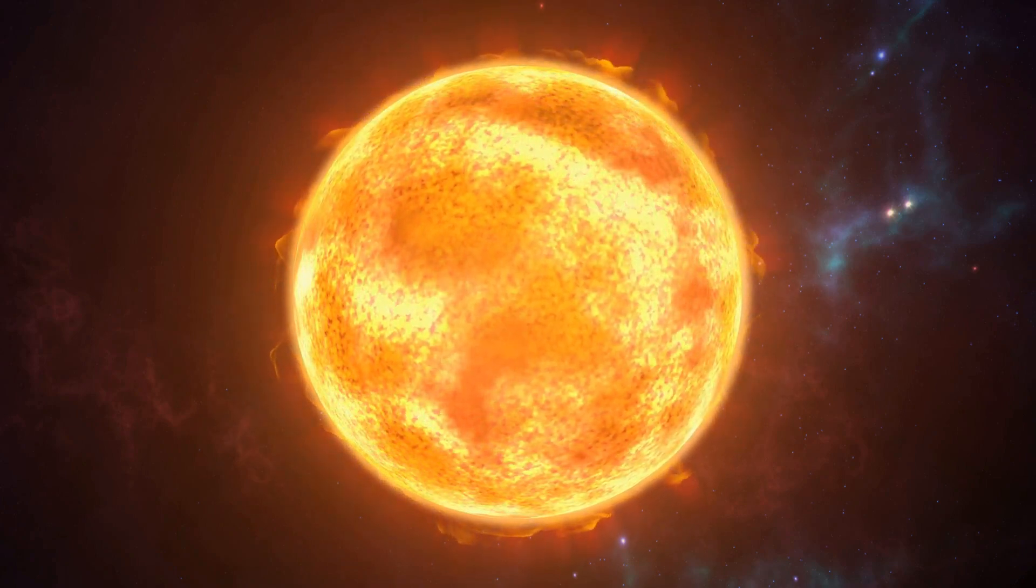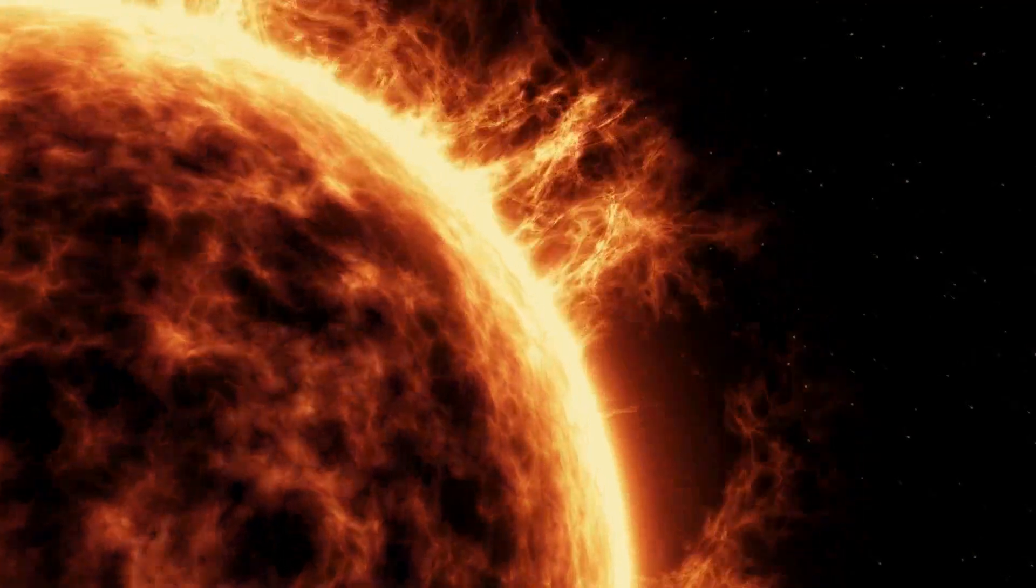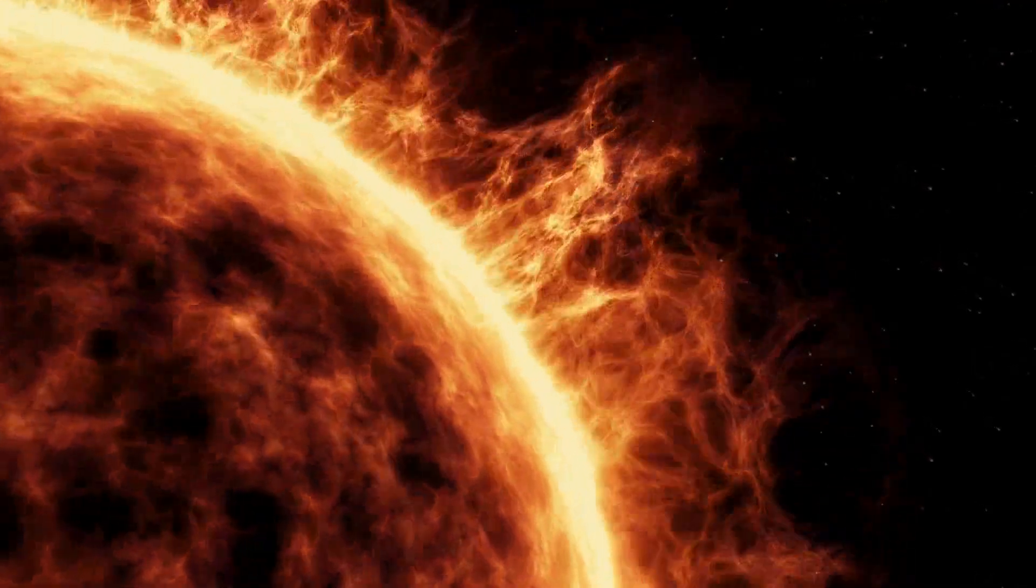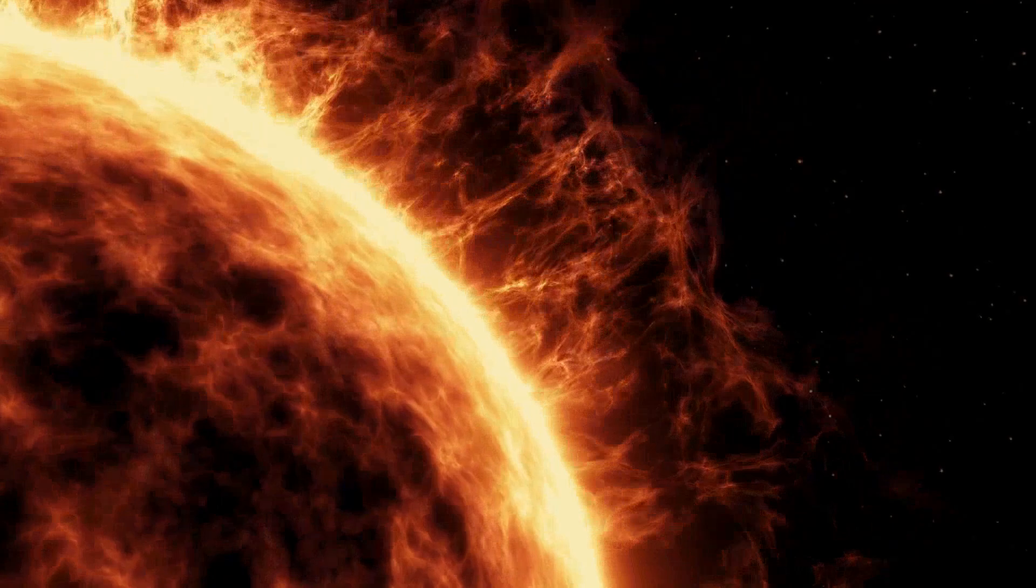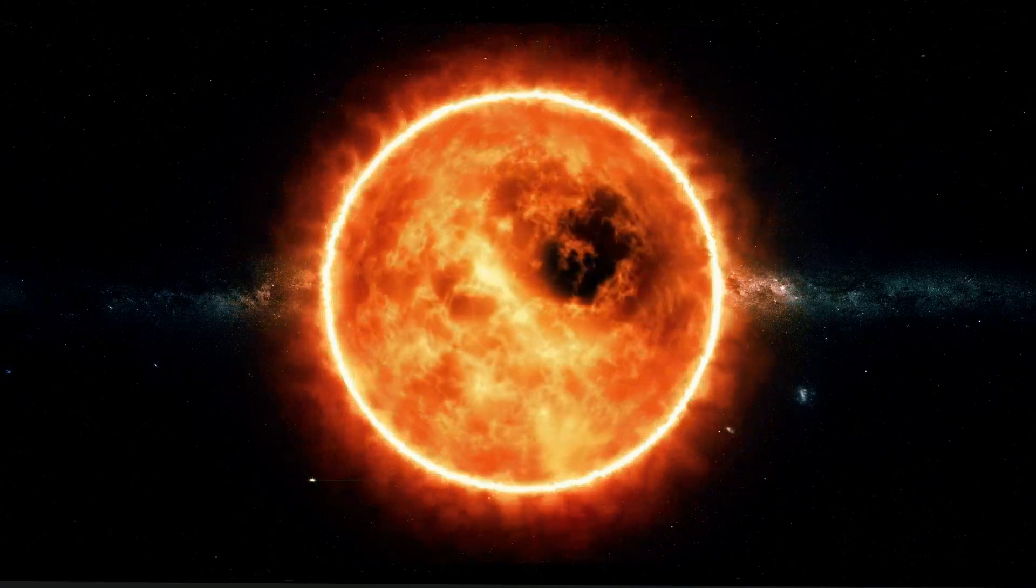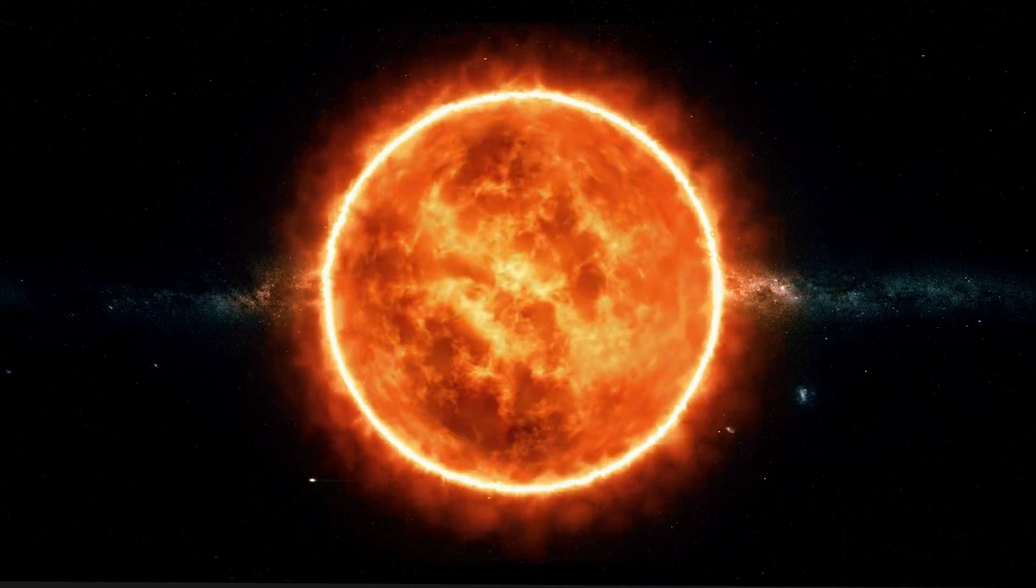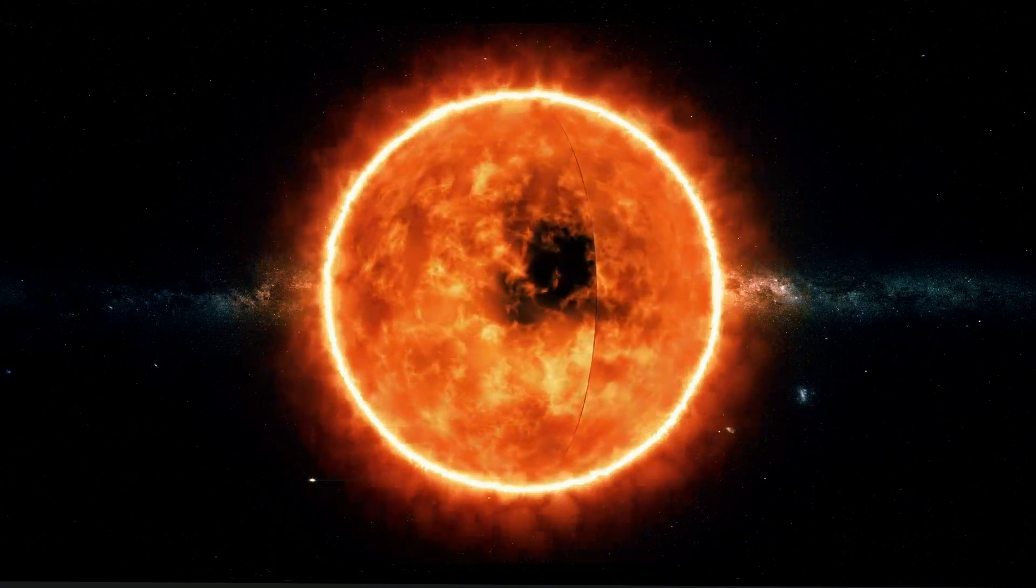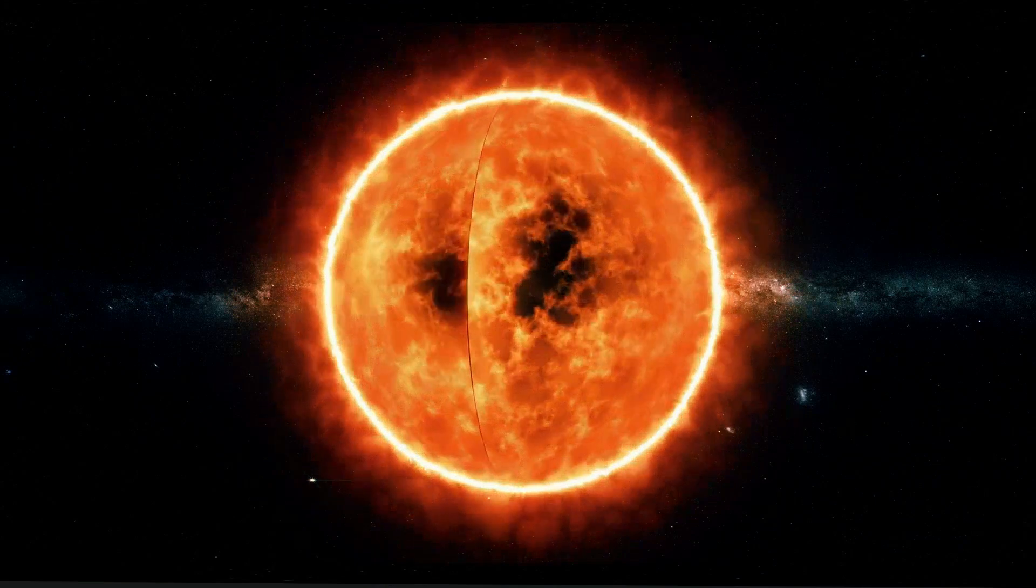The Sun's energy output is about 386 billion billion megawatts, and its gravitational force is so strong that it holds the entire solar system together. The Sun's gravity also causes planets to orbit around it, with Earth located about 93 million miles away, a distance known as one astronomical unit.